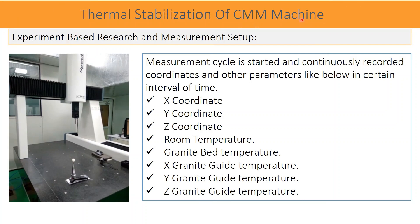The experiment setup: the photograph shows the measurement setup of the system and the experiment carried out. The measurement cycle was started and coordinates along with other parameters were continuously recorded at certain intervals of time — X, Y, and Z coordinates, room temperature, granite bed temperature, and X, Y, Z granite guideway temperatures.